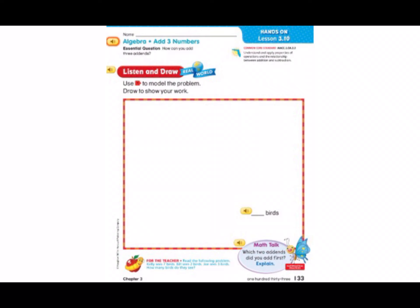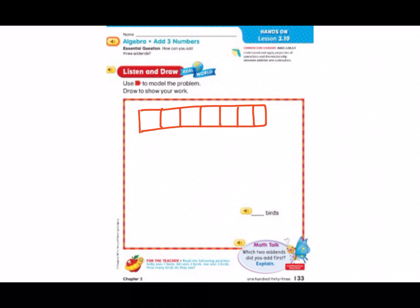So listen as I read the following problem. Kelly sees seven birds. Bill sees two birds. Joe sees three birds. How many birds do they see? So let's draw a model. The first thing we're going to draw is Kelly sees seven birds, so let's draw a cube train of seven. And I'm going to draw a seven out to the side just to remind me.